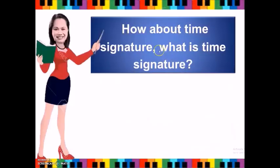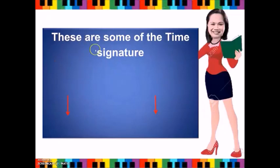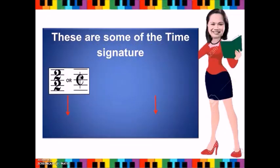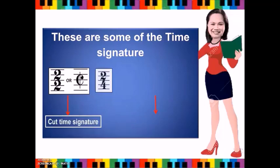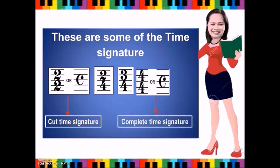How about the time signature? Time signature is a pair of numbers written at the beginning of the staff. It tells us how the music is to be counted. These are some of the time signatures: the 2/2 or cut time signature, 2/4, 3/4, 4/4 or common time signature, and 6/8.